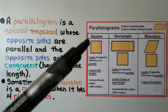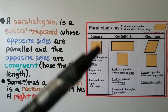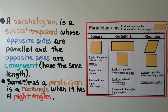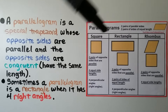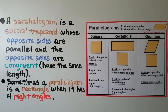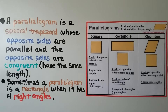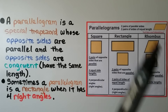A square fits that — this side is parallel to this one, that's one pair, and this side is parallel to this one, that's another pair, and it has two pairs of sides of equal length. A rectangle fits it too — the top is parallel to the bottom, and this line is parallel to this line, with two pairs of equal-length sides. A rhombus also fits, with parallel sides and two pairs of sides of equal length. So they all fit as parallelograms.